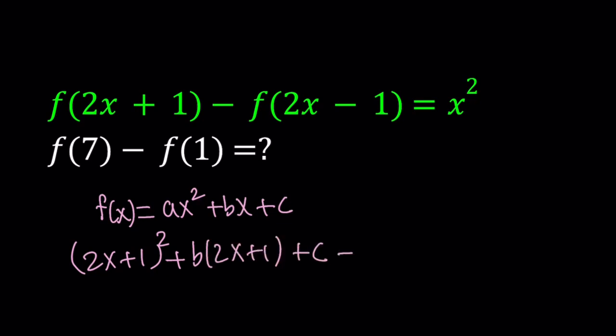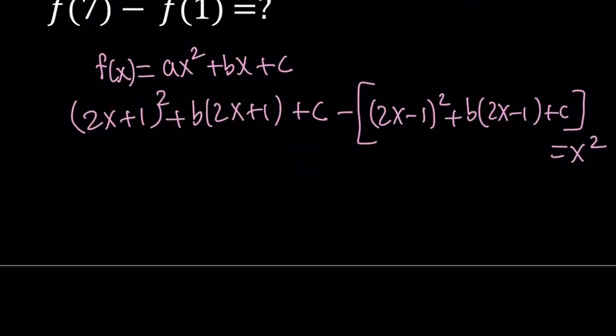So c is not going to change. And then from that, let's go ahead and subtract f of 2x minus 1, very similarly. And this is supposed to equal x squared. Is that possible? Let's test it out.